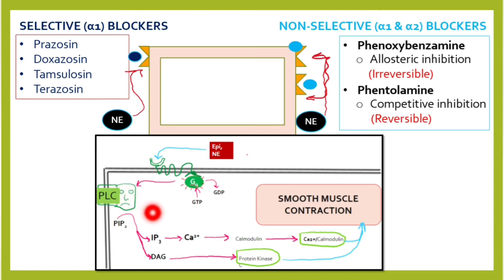Phospholipase C converts phosphatidylinositol diphosphate into inositol triphosphate (IP3) and diacylglycerol (DAG). IP3 leads to release of calcium, which combines with calmodulin to form the calcium-calmodulin complex. DAG activates protein kinase C, leading to phosphorylation of myosin light chain kinase.